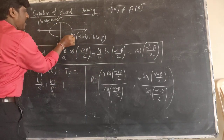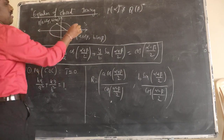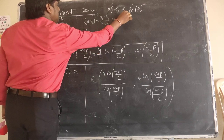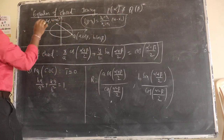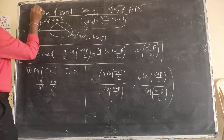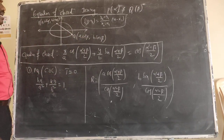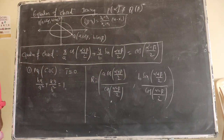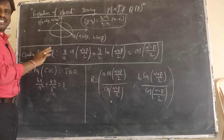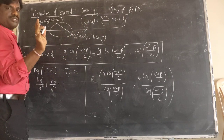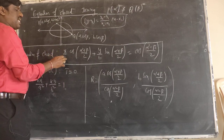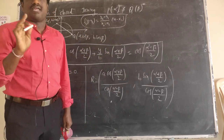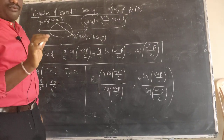The line joining two points uses the formula: y − y₁ = [(y₂ − y₁)/(x₂ − x₁)] · (x − x₁). Substituting the two parametric points on the ellipse — a·cos(α), b·sin(α) and a·cos(β), b·sin(β) — after simplification the equation of the chord is: (x/a)·cos[(α+β)/2] + (y/b)·sin[(α+β)/2] = cos[(α−β)/2].